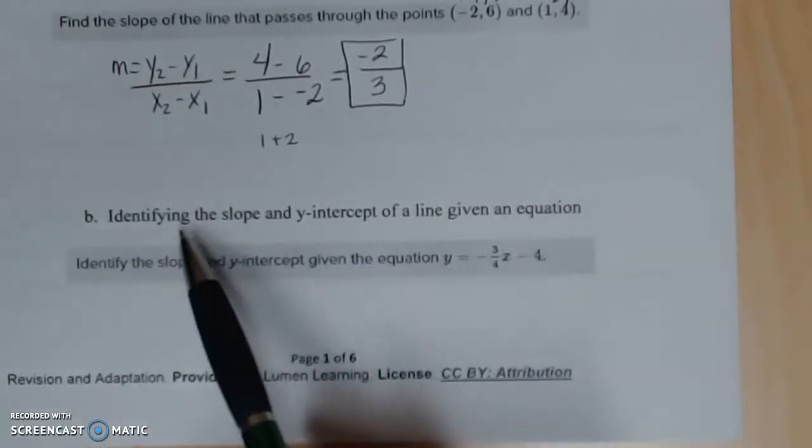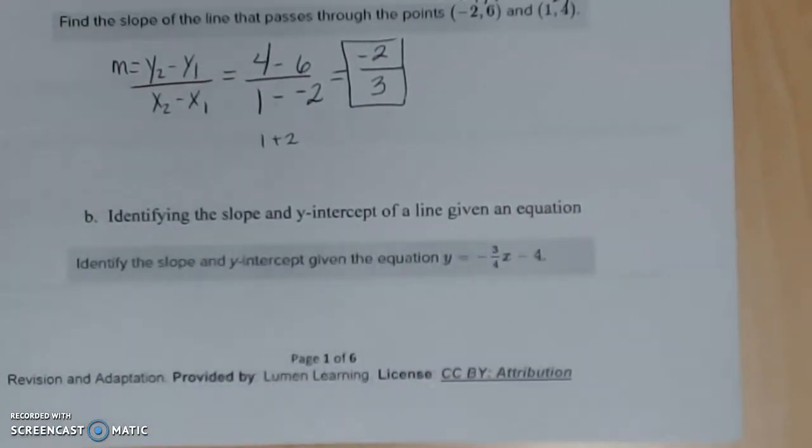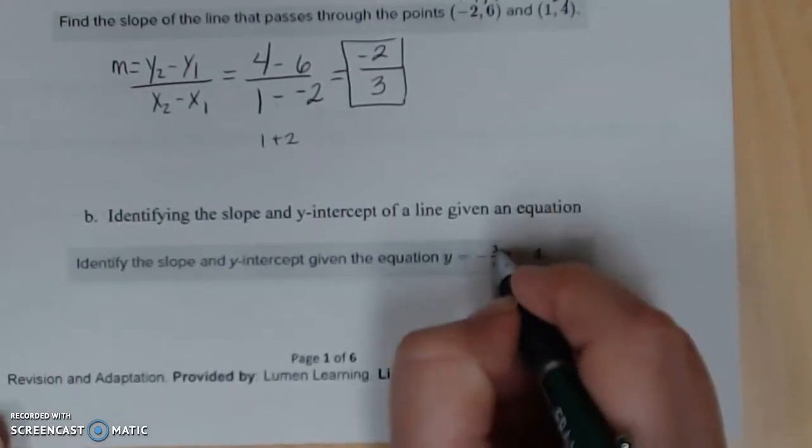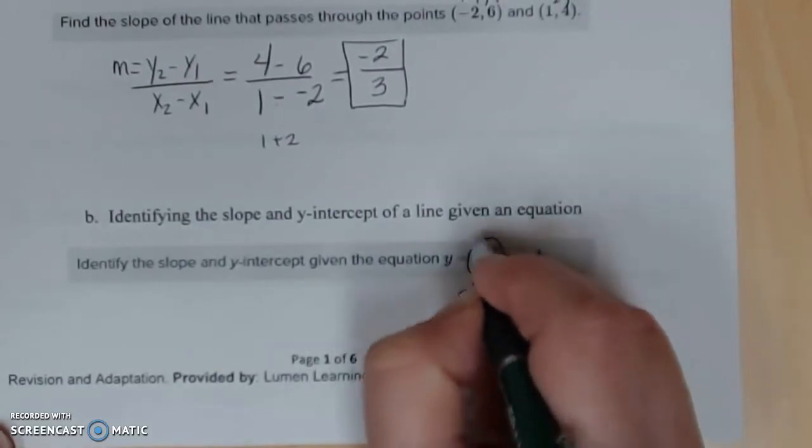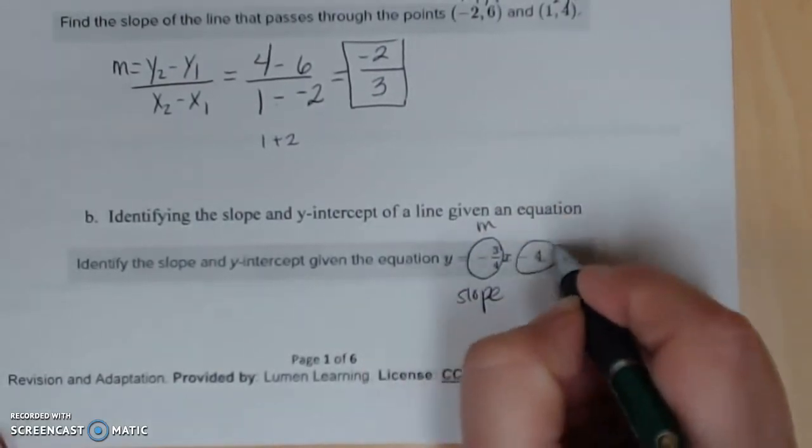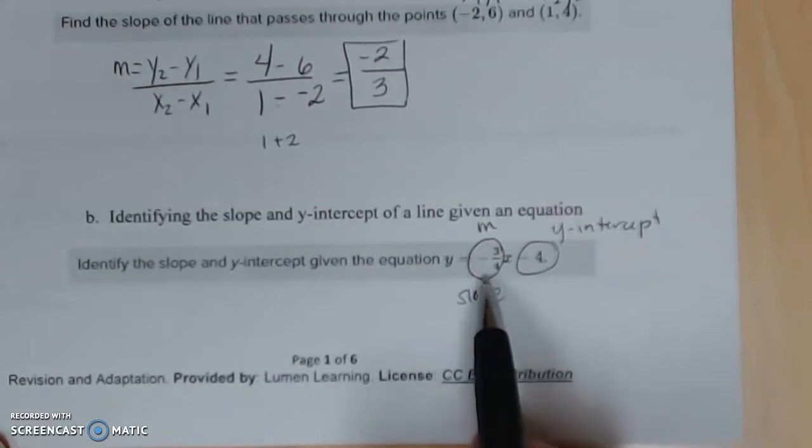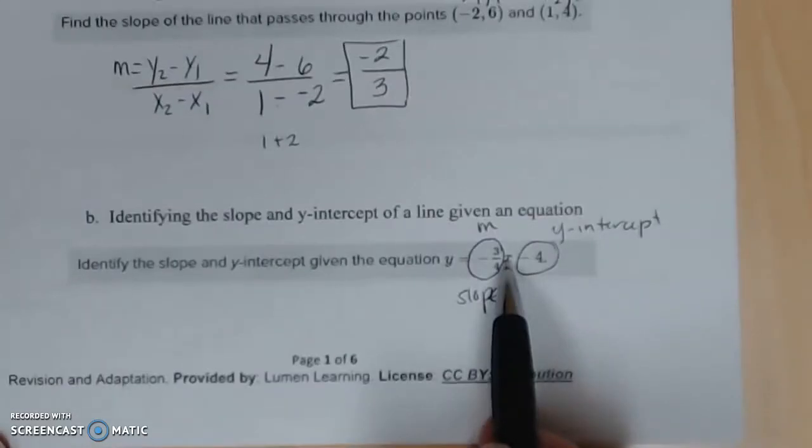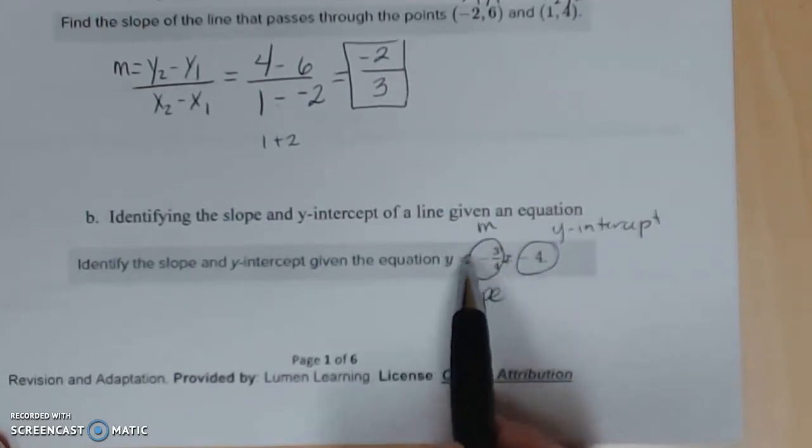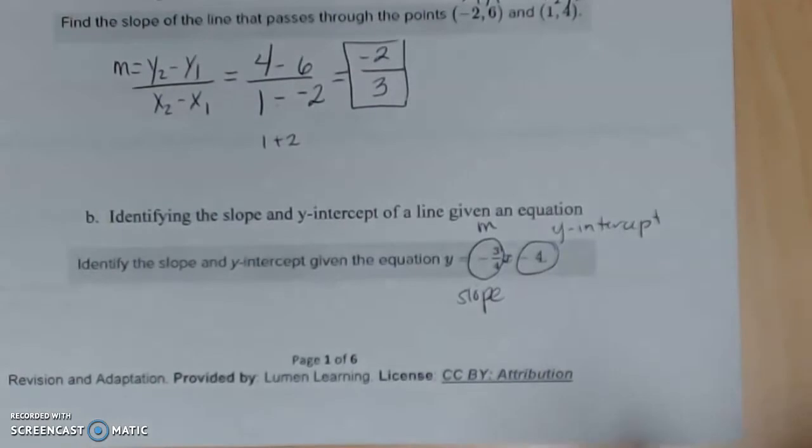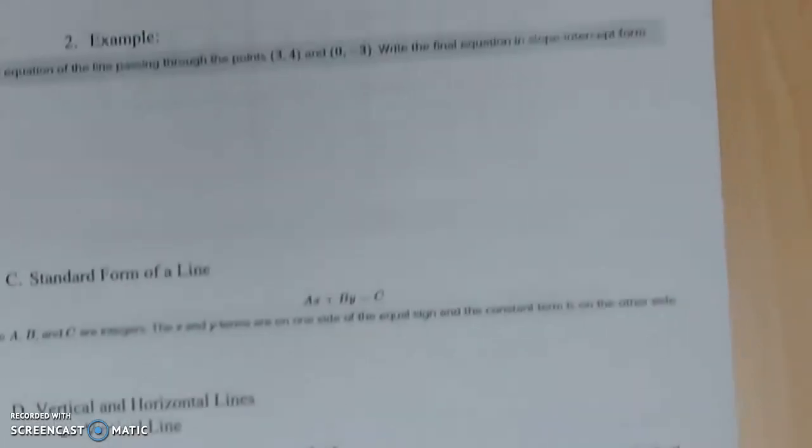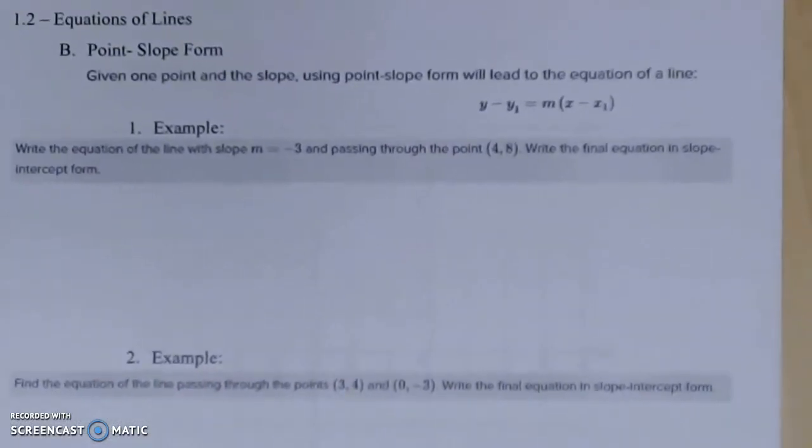Another thing I want to emphasize is being able to identify the slope and intercept given an equation. Here's one in slope-intercept form. Y is by itself, everything else is on the other side. This value right here attached to your x is your slope, we call it m. And this would be your y-intercept, your b-value. It's important to identify this. We don't say the slope is -3/4x. We don't include the variable. We can identify slope and we can calculate it, which leads us into part B: point-slope form.